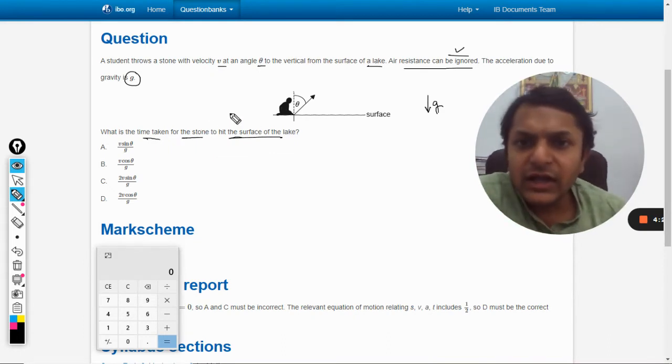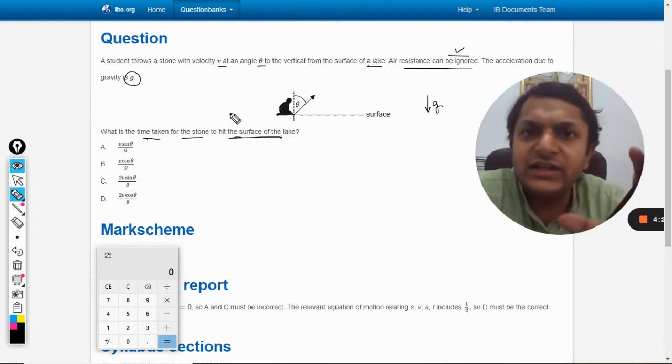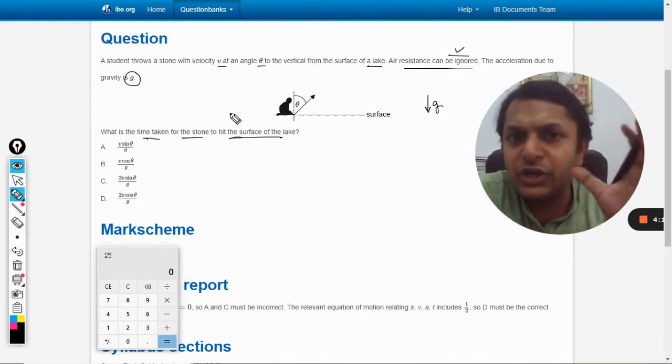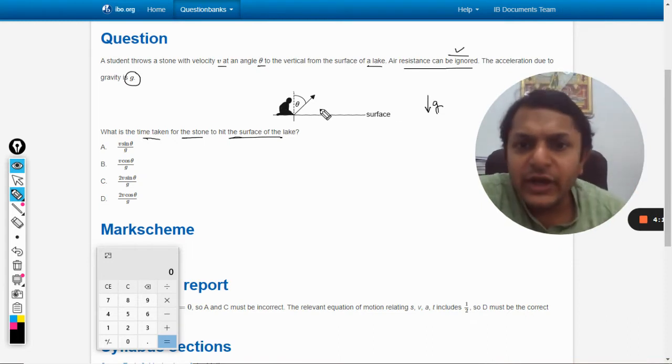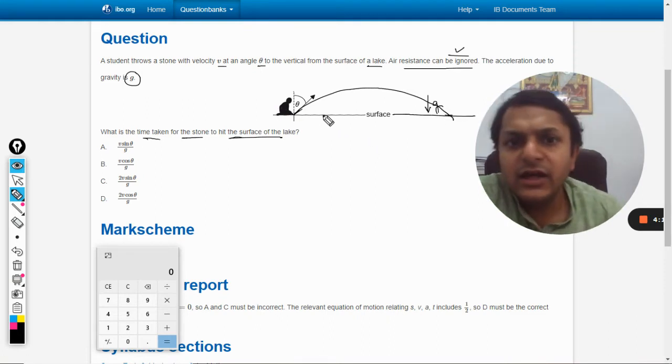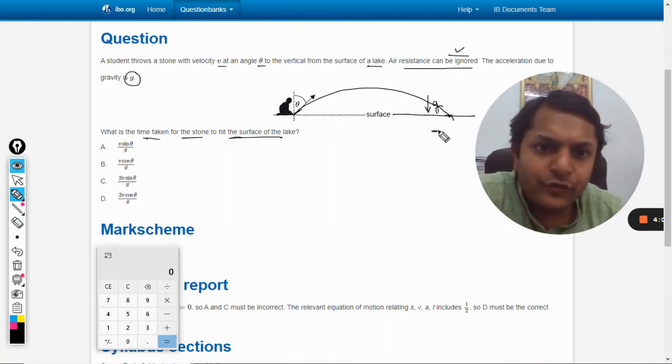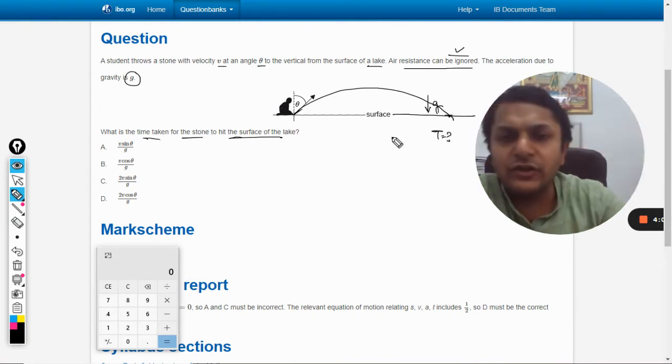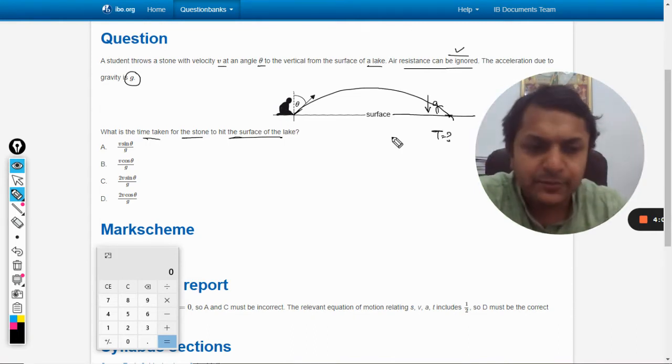In such a question, obviously this is not from motion in 1D, it is from motion in 2D—motion in a plane. So it is going to become a projectile soon after like this. And we want to find the time after which it is going to hit the same horizontal level, that is, hit the lake.